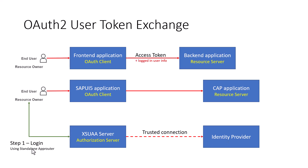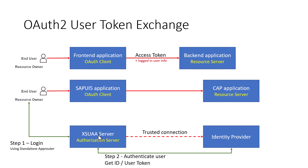We can use a standalone app router or a managed app router. Let's say we use a managed app router and log in there. Step two: the XSUAA server delegates authentication to the identity provider and we get an ID token or user token. This ID token or user token must be in the form of a JWT, as specified in OpenID Connect.